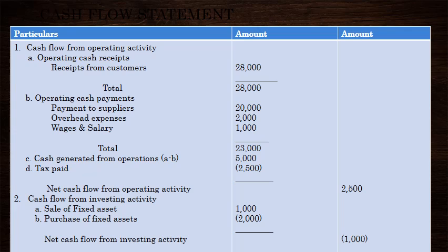2 is the cash flow from investing activity. 2 is the sale of fixed asset. The sale of fixed asset is the amount of $1,000. 2 is the purchase of fixed asset. If we make the cash flow, our expenses are sufficient.